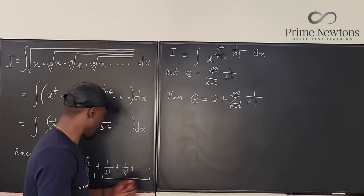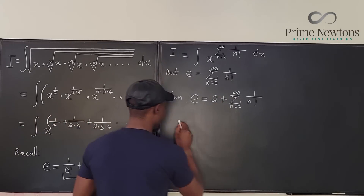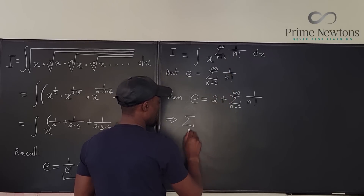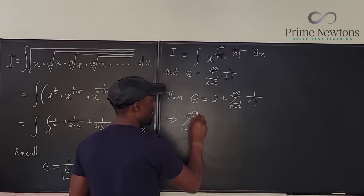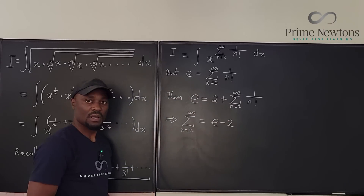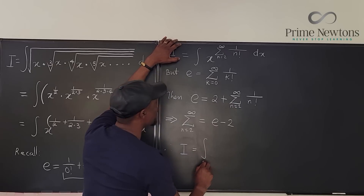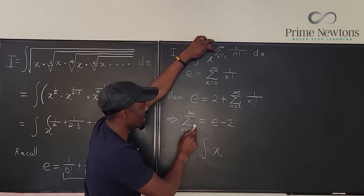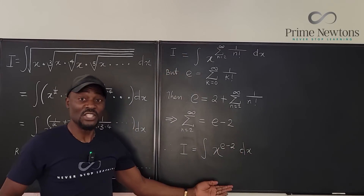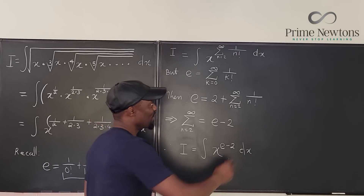If we start from 2 we've taken care of the first two terms. This implies that the sum from n equals 2 to infinity of 1/n! is basically equal to e minus 2. Therefore the integral we're trying to evaluate is equal to the integral of X raised to the power (e minus 2). There's no other work to do other than to just integrate using the power rule.